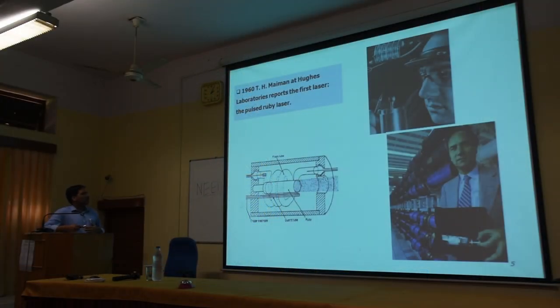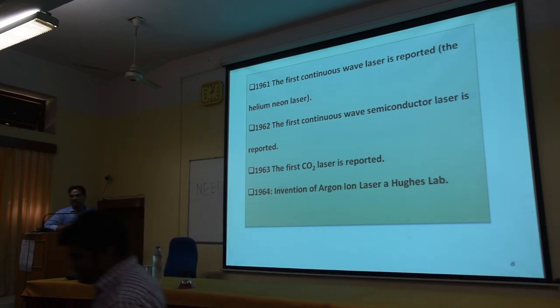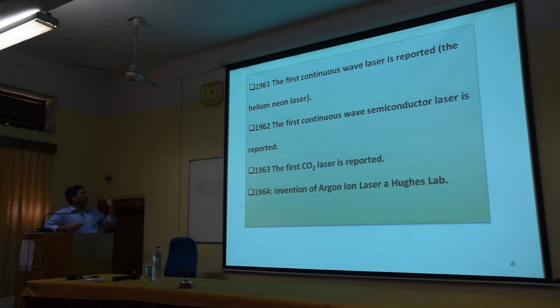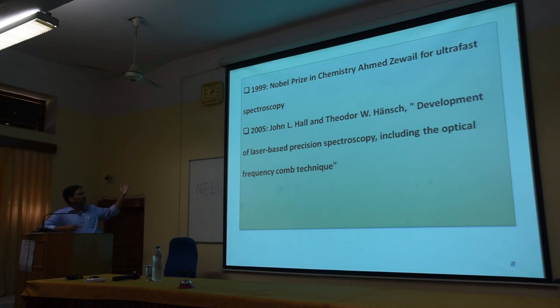This is a diagram of a ruby laser showing the actual laser setup. In 1960, the first continuous laser was reported — the helium-neon gas laser. Thereafter in 1962, the first continuous wave semiconductor laser was developed. CO2 laser followed in 1963, then argon and more lasers were invented. In 1984, the first X-ray laser was invented. In 2000, John L. Hall and Theodore W. Hänsch developed laser-based precision spectroscopy, including the optical frequency comb technique.